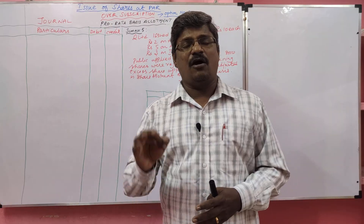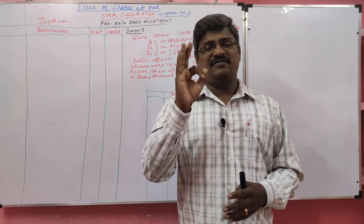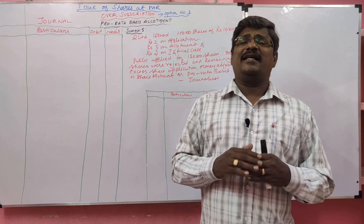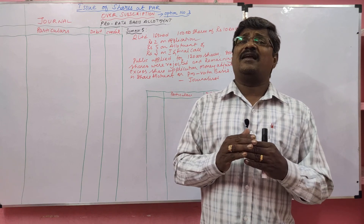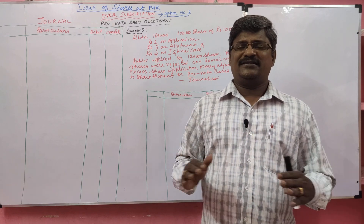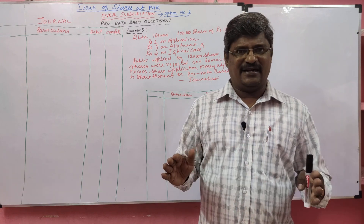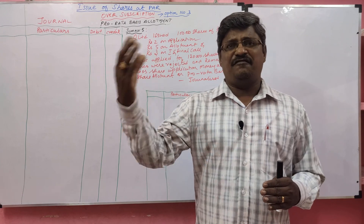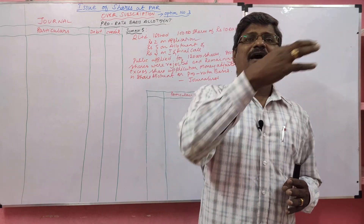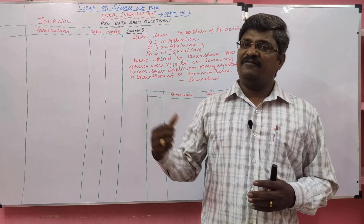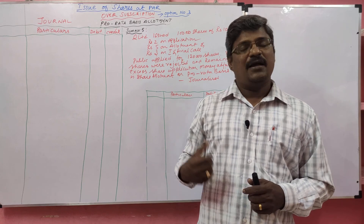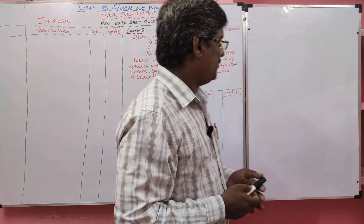We are going to learn option 3. This is very very important. Here the excess shares were rejected — partially refunded and partially taken to the allotment. We are going to learn this with the help of this problem.